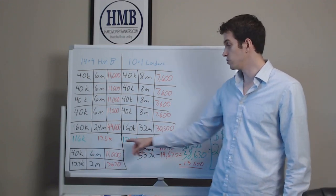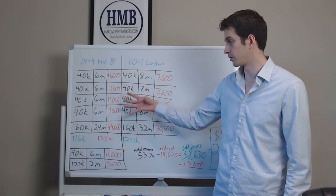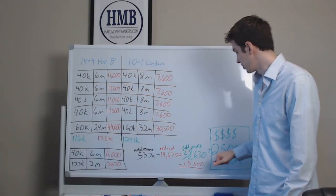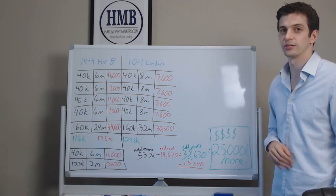Now, if you subtract the $13,000 difference by only doing four flips, you're making the magic number of $25,000 more a year.